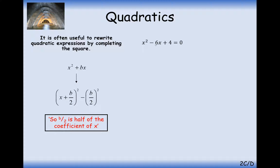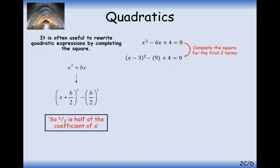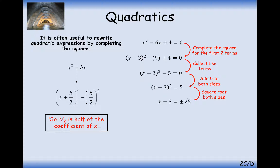Let's have another go. Sort out the first two terms first, then leave the 4 until a little later. Half of 6 is 3, so x minus 3 squared, take away 3 squared which is 9. Add on your 4 and you get equals 0. Simplify what we've got at the back: x minus 3 squared minus 5 equals 0. Then add 5 onto both sides, square root both sides, add on your 3, and you get x equals 3 plus or minus root 5.